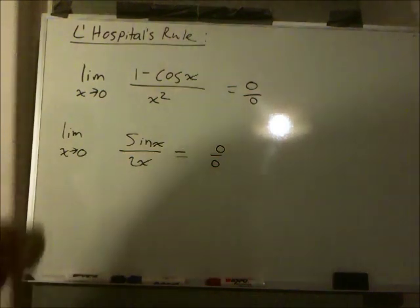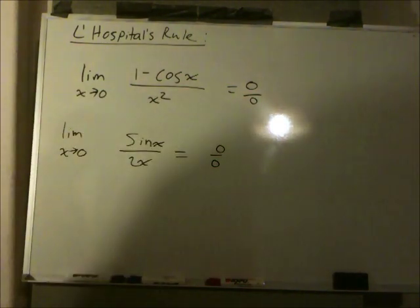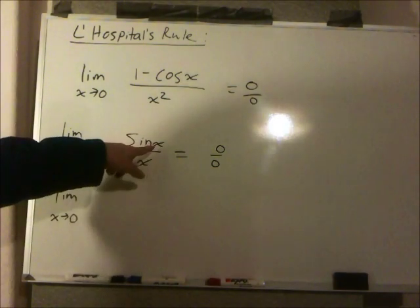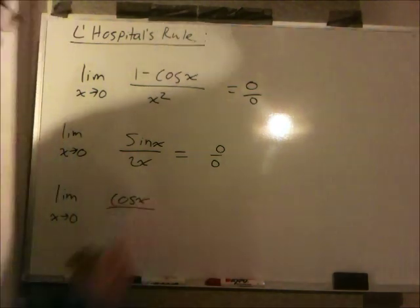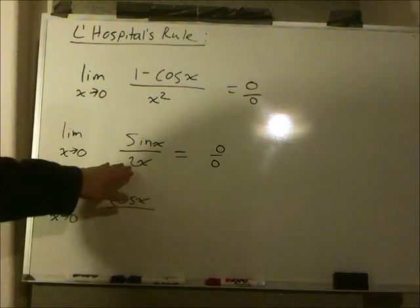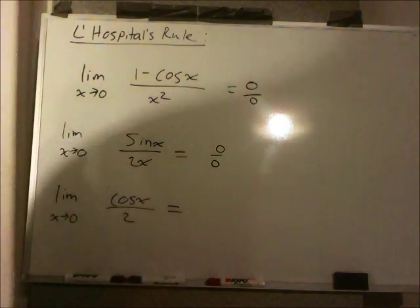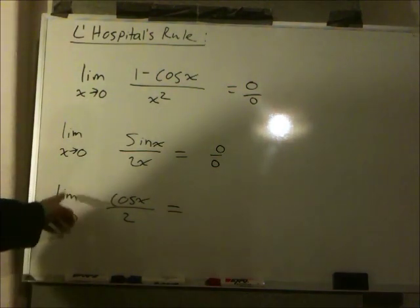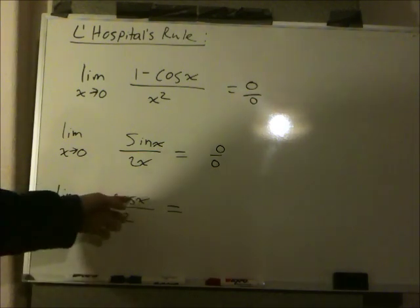Now we can either stop or realize that we still have an indeterminate form. We're trying to find the limit of a rational function, so we apply L'Hopital's rule again. Derivative of sine is cosine. Derivative of 2x is 2. So now we're just going to re-evaluate this limit. Cosine of 0 is 1.